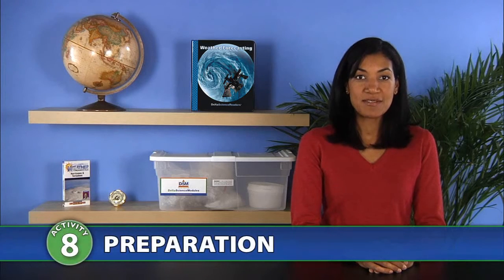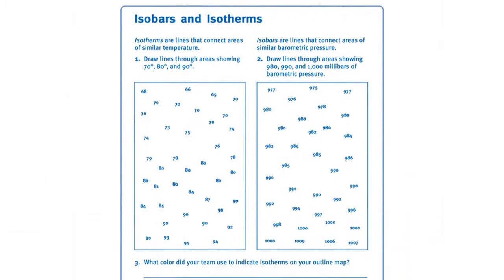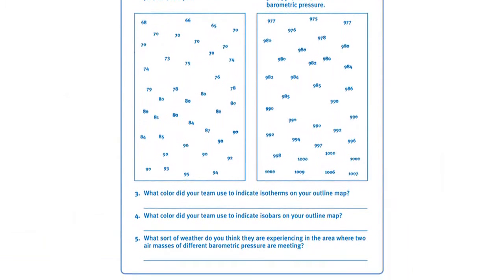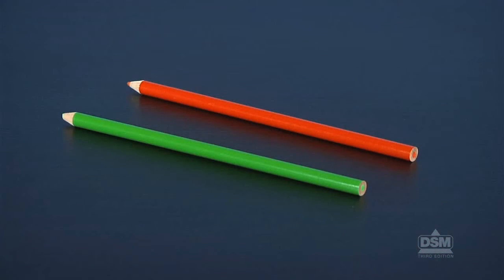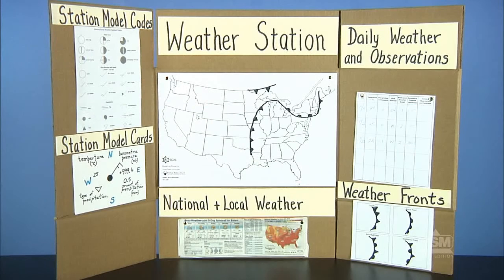To prepare for the activity, make a copy of Activity Sheet 8 for each student. Also, collect weather reports. Each team of two will need two different colored pencils and their weather stations containing the copy of the U.S. map.